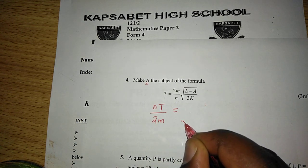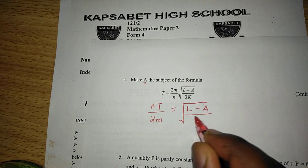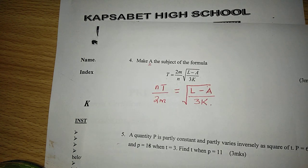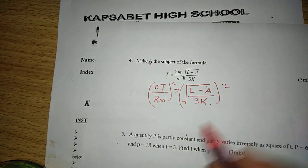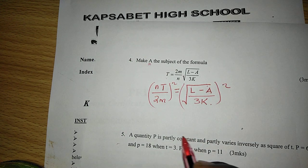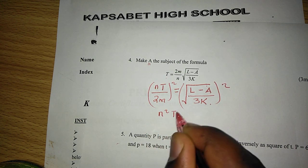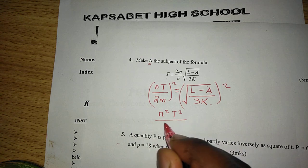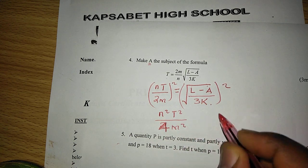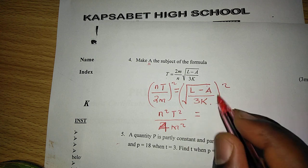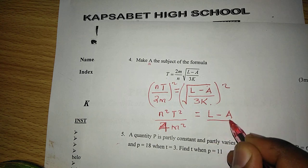But on this side now they disappear, such that we remain with the square root of l minus a, then everything divided by 3k. Again, we can now square both sides such that the square root sign simplifies with the square, and we will have n squared and t squared out of 4m squared. Because we have squared, the square root symbol will simplify.